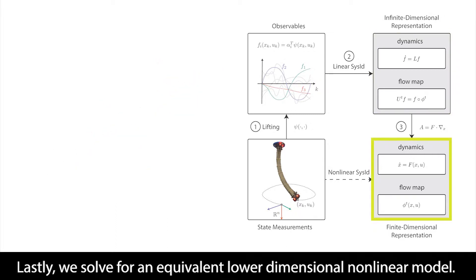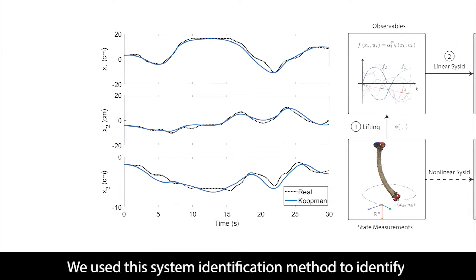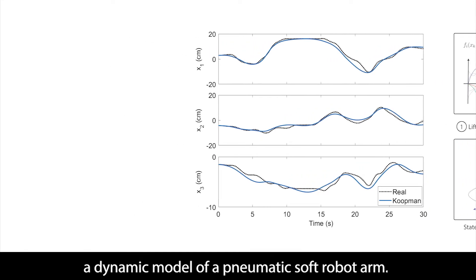Lastly, we solve for an equivalent lower-dimensional nonlinear model. We use the system identification method to identify a dynamic model of a pneumatic soft robot arm.